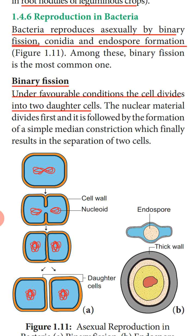As a result, one single bacterial cell divides into two daughter cells. This is called binary fission. The nuclear material divides first and is followed by the formation of a simple median partition — constriction — which finally results in the separation of the two cells.